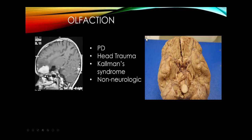Olfaction: loss of smell is usually non-neurologic. The highest-yield neurologic cause is head trauma causing shearing of olfactory fibers at the cribriform plate. Meningiomas growing in this area can also cause smell loss. Hyposmia is found in more than 90% of patients with Parkinson's disease.